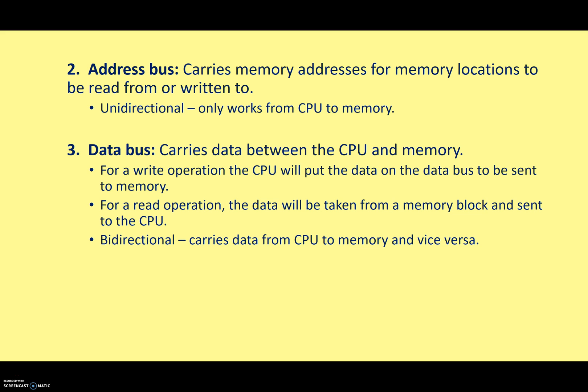And third and finally, we have the data bus. This carries data between the CPU and the memory. For a write operation, the CPU will put the data on the data bus to be sent to memory. For a read operation, the data will be taken from a memory block and sent to the CPU. This is bidirectional. It can carry data from the CPU to memory and vice versa. So this is what your memory data register is going to use when it's transferring data and instructions.